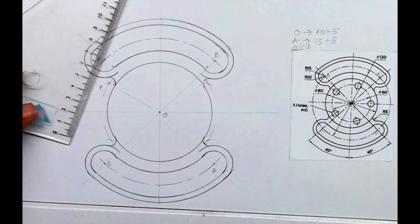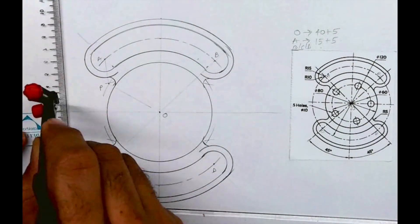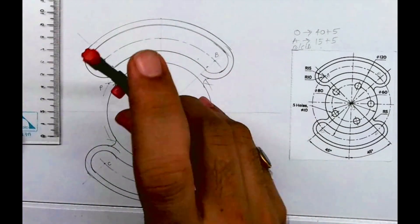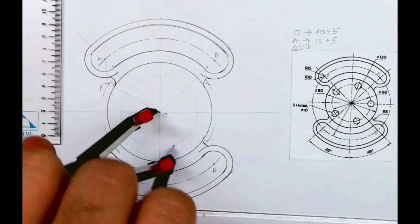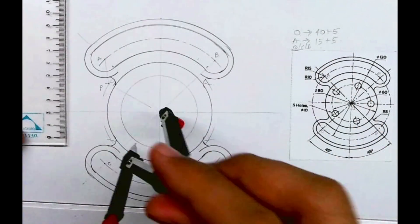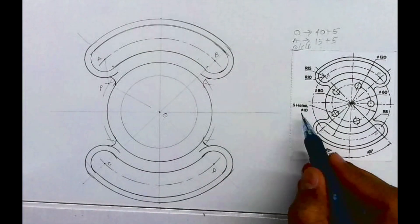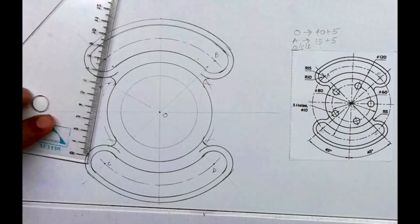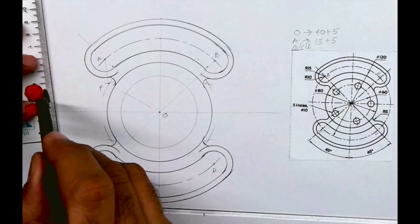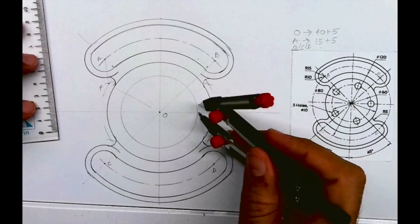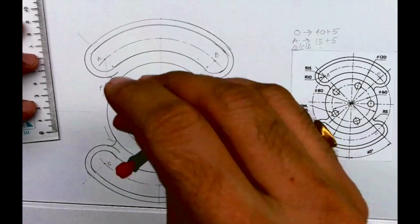For that, first I will draw radius. They have given diameter 60, so I will take radius 30 and I will draw circle. Diameter is 10, so I will take radius 5, and I will draw the first circle which is on the horizontal line from O.